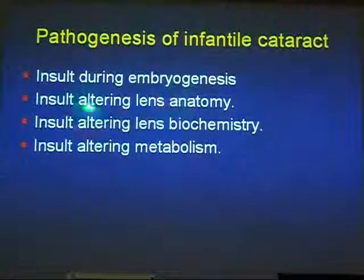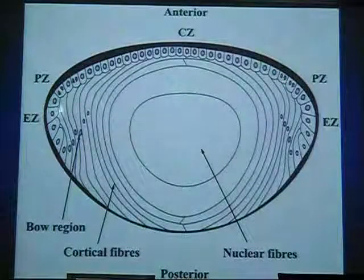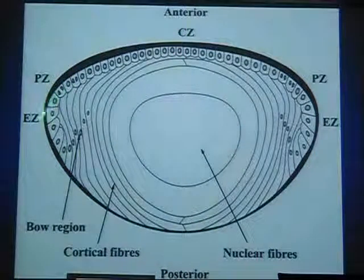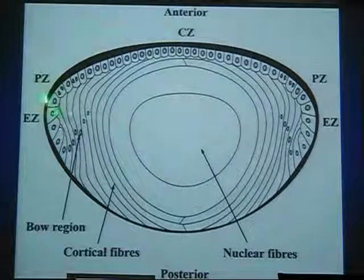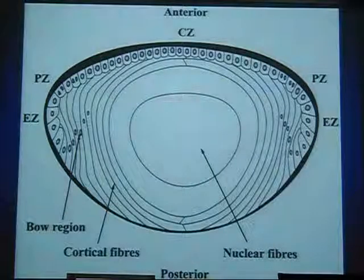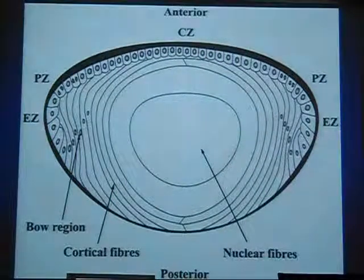The second issue is insult altering lens anatomy. The lens has a capsule, and the epithelium just underneath the capsule. This is the site of the lens that forms the future fibers — the epithelial cells lose their nuclei and become condensed toward the center. Any insult occurring in this anatomy, like trauma damaging the lens capsule or damaging the cortical fibers, can lead to cataract in children.